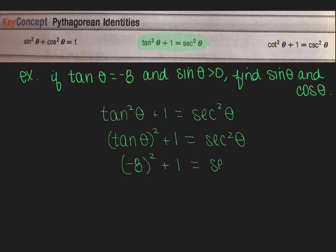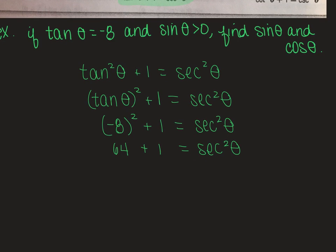And then from there we know that the tangent of theta is negative eight, so we have negative eight squared plus one equals secant squared theta. So we know that this will be 64 plus one equals secant squared theta, and so that means that 65 is secant squared.